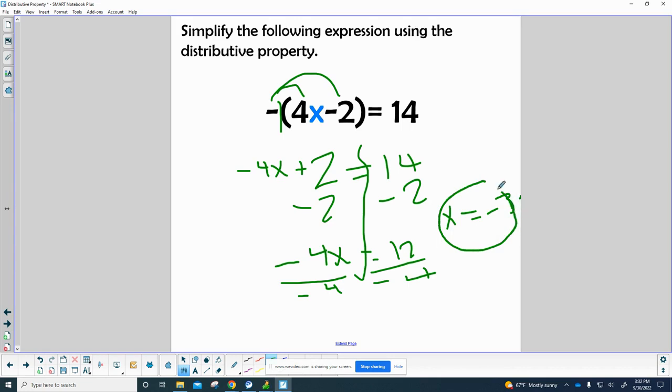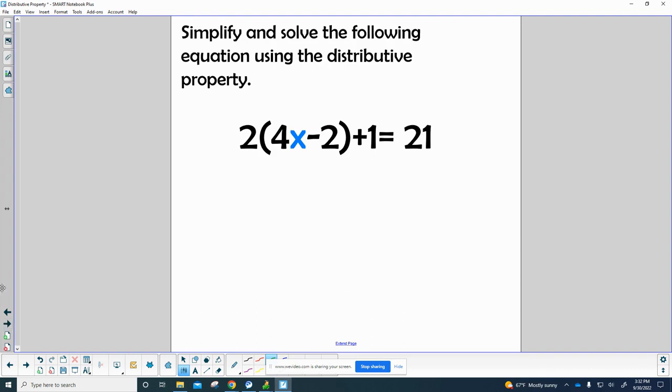Last example. We've got one of these where we've got to get rid of the parentheses and combine that one with the left side before we can solve. Let's get with it. 2 times 4x is 8x, 2 times that minus 2 is minus 4, plus 1 equals 21. So we combine negative 4 and 1, and that gives us 8x minus 3 equals 21.